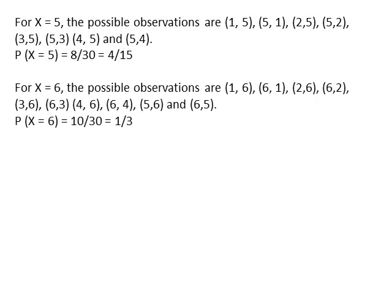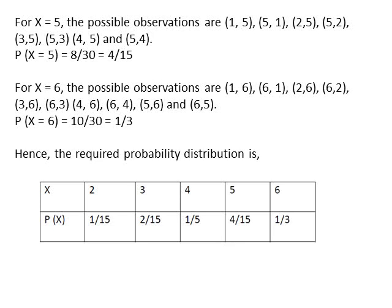For x=6, the possible observations are (1,6), (6,1), (2,6), (6,2), (3,6), (6,3), (4,6), (6,4), (5,6), and (6,5). So, probability of x=6 equals 10 by 30 equals 1 by 3. In the next step, we write the required probability distribution as shown.